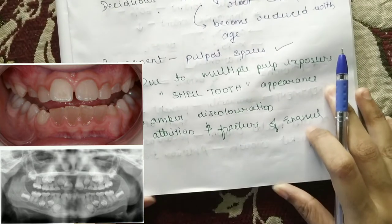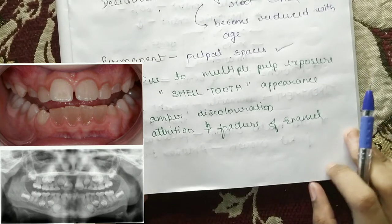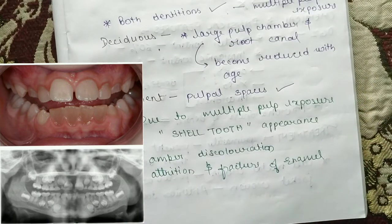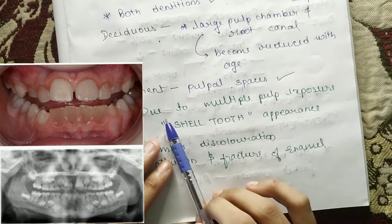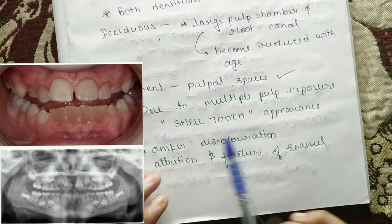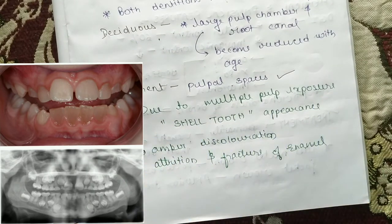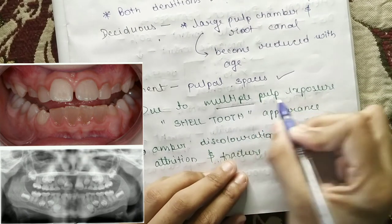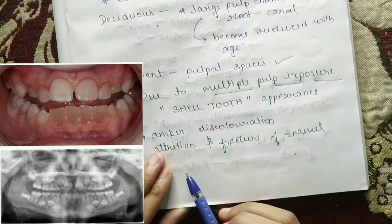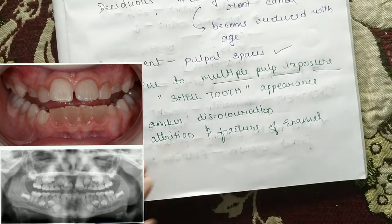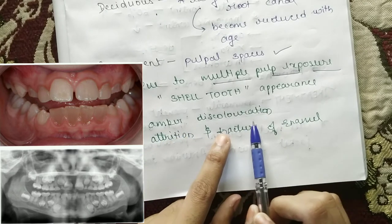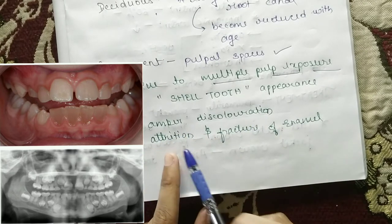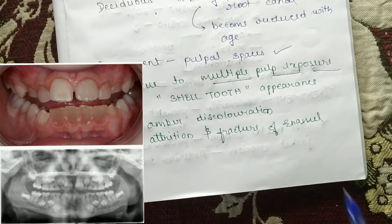If you talk about the permanent tooth — as I am showing you in the pictures — you will see the pulp spaces. Due to multiple pulp exposure, it will have a shell tooth appearance. That shell tooth will show amber discoloration and attrition or fracture of enamel.